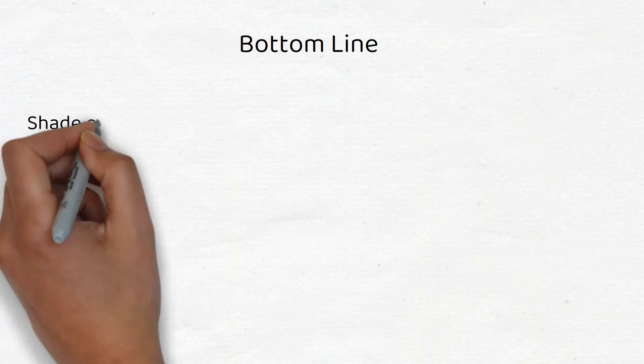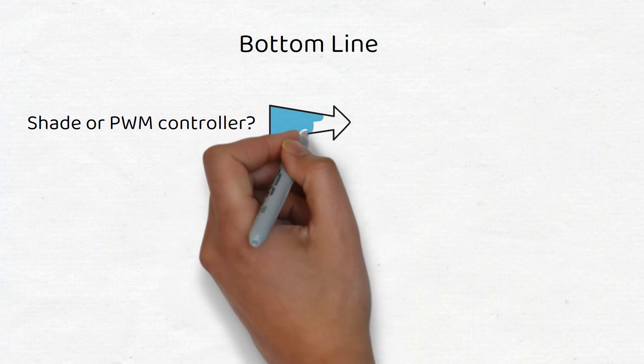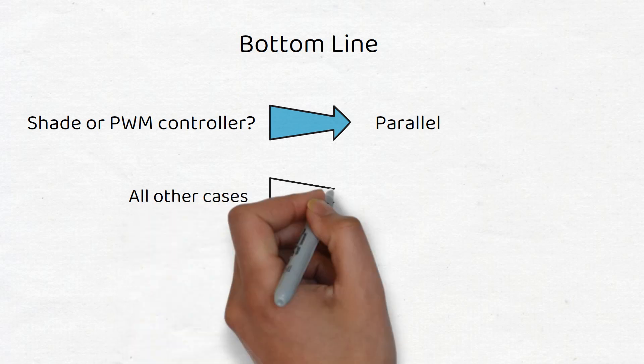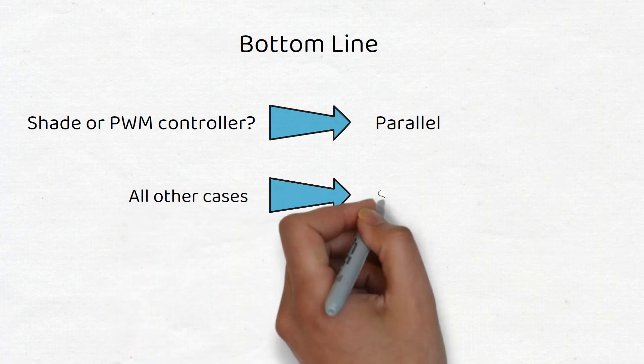Bottom line, if you choose between series or parallel, you have to keep in mind the shading conditions and the type of charge controller you are using. If you expect shading or use a PWM charge controller, choose parallel. In all other cases, go for a series connection.